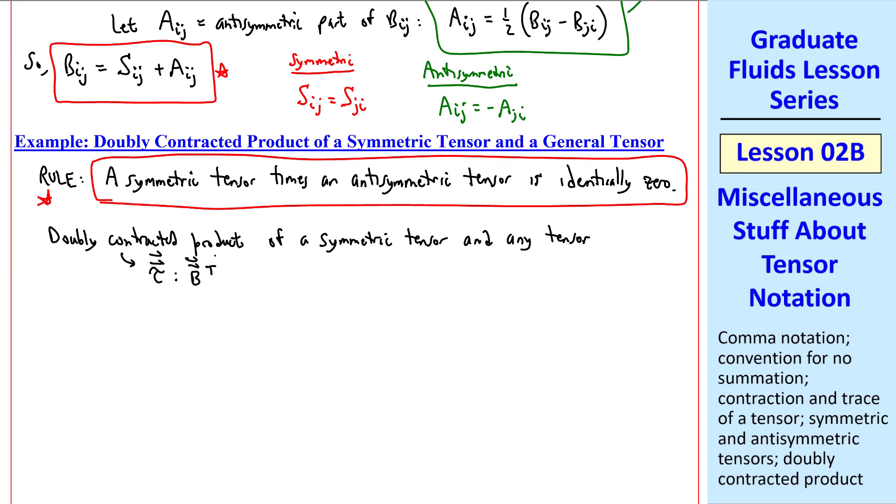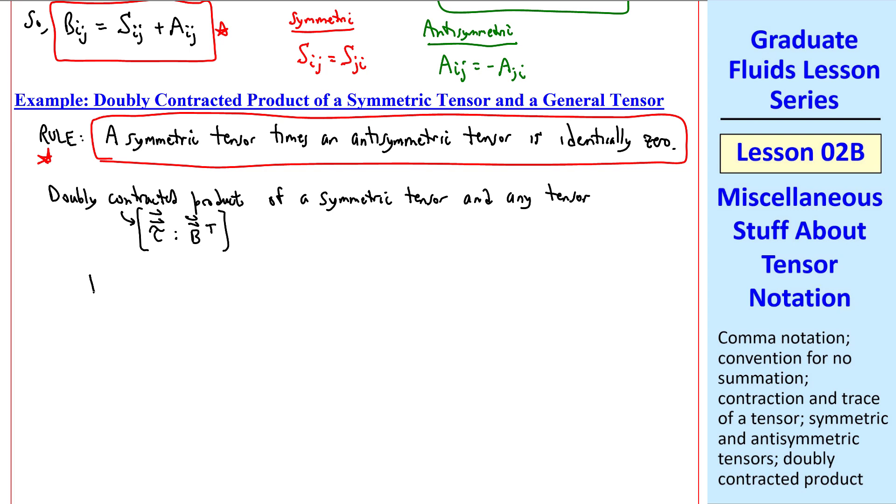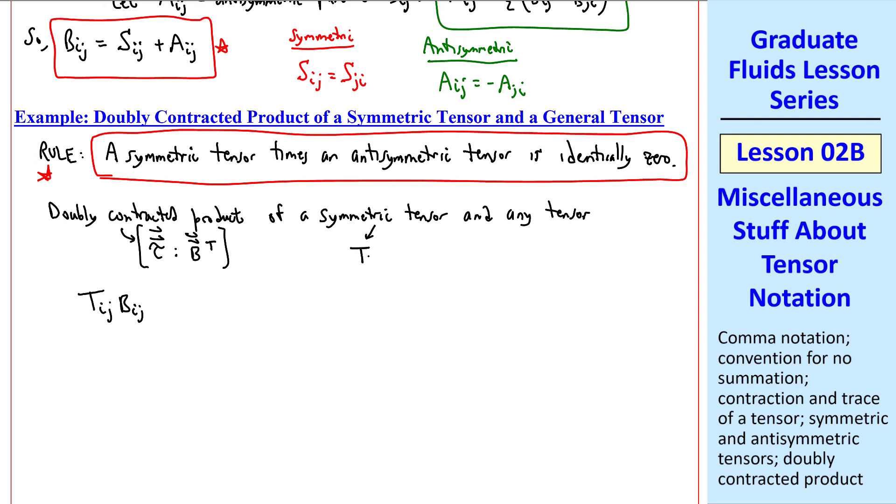Now let's consider the doubly contracted product of a symmetric tensor and any tensor, not necessarily symmetric or antisymmetric. In vector notation, some authors write this as tau colon b transpose. But in tensor notation, we simply write Tij, Bij, where the symmetric tensor is Tij and our other tensor is Bij. And we're simply multiplying them together.